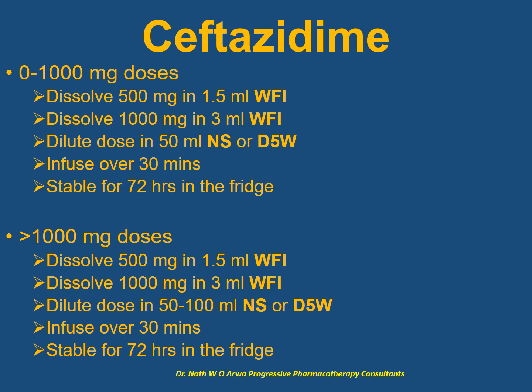For ceftazidime, for doses of up to 1 gram, dissolve every 500 mg in 1.5 ml of water for injection and every 1 gram in 3 ml of water for injection. Dilute the final dose in 50 ml of normal saline or D5W and infuse over 30 minutes; stability is 72 hours in the fridge. For doses exceeding 1 gram, follow the same dissolution ratios, dilute the final dose in 50 to 100 ml of compatible IV fluid, infuse over 30 minutes, with stability of 72 hours strictly in the fridge.